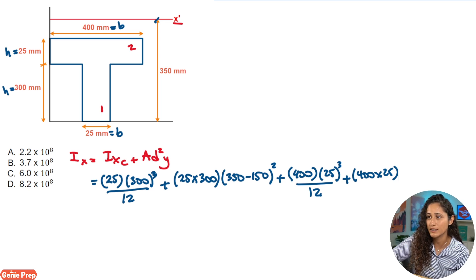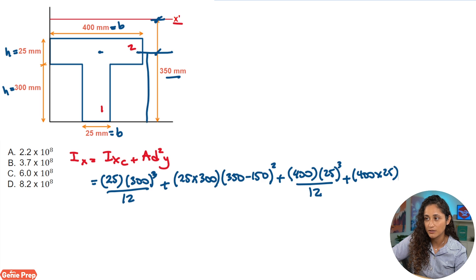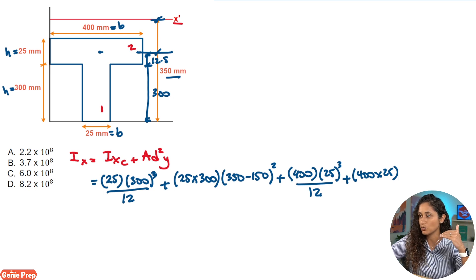So DY, again, is going to be the distance from the centroid of shape two to X prime. So again, what we can do here is we can take 350 and subtract from this distance here. Now this distance is going to be 312.5, because the distance from here to here, that's half of 25, which is 12.5. And then this distance here is 300. So that gives us 312.5. So we can do 350 minus 312.5. And then don't forget again to square this term.